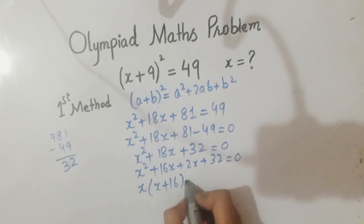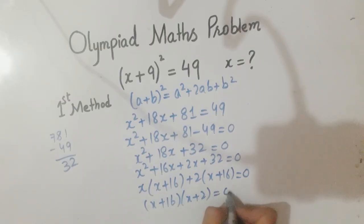So x plus 16, and then take 2 as common, so x plus 16. We get (x+16) and the other one is (x+2), both equal 0.